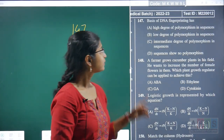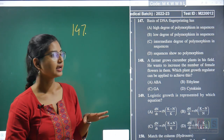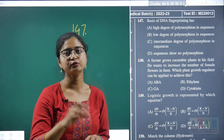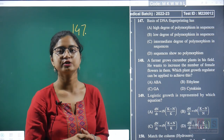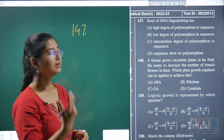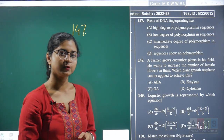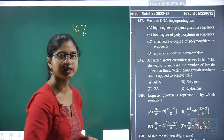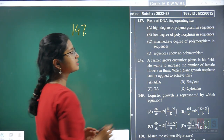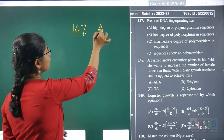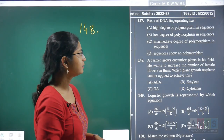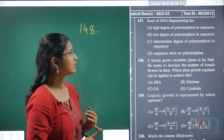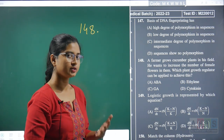Question 147: the basis of DNA fingerprinting is finding polymorphic conditions in DNA — specifically, higher degrees of polymorphism in sequence. This polymorphism criterion is the basis for DNA fingerprinting. Hence, question 147's correct answer is option A. Question 148: a farmer grows cucumber plants and wants to increase the number of female flowers.